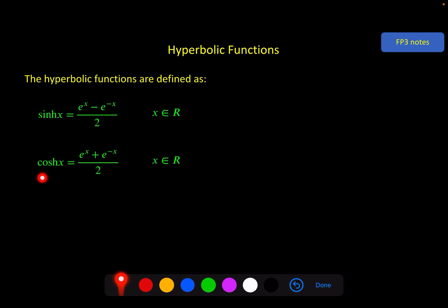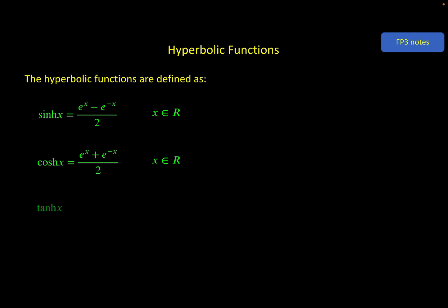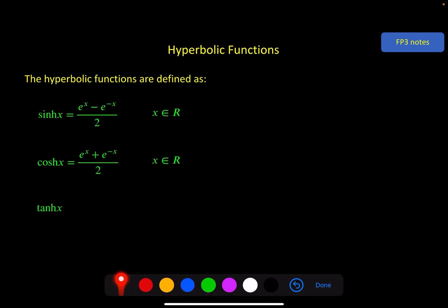Now at this point we're already going to start to see more similarities with the trig functions because to get the thing called TANH, as you might expect having studied trig, this is going to be SINH divided by COSH. But again having similarities doesn't make it the same, because if you put this divided by this, a little bit of manipulation, you can write TANH like this which is very different to TAN.